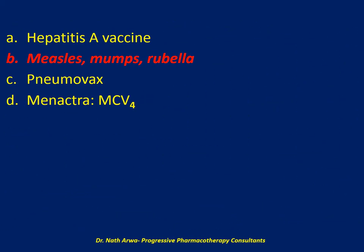MMR it is. MMR is the only live attenuated vaccine from the list above. Live vaccines used in pregnancy or in immunocompromised patients are avoided due to risks of developing the actual infection, even though the live vaccine is attenuated. The varicella zoster vaccine is another example of a live attenuated vaccine, just for your information.